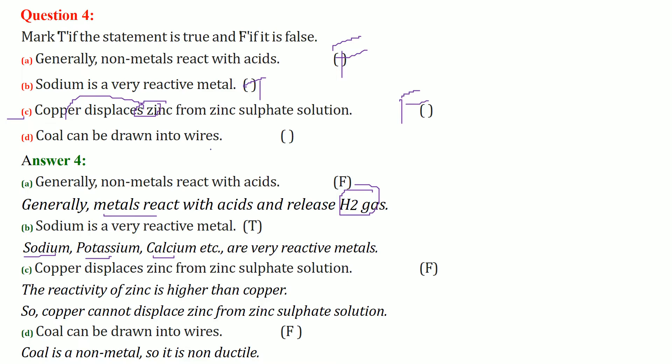Coal cannot be drawn into wire. This becomes false because coal is a non-metal, so it is non-ductile. Therefore it cannot be drawn into wires.